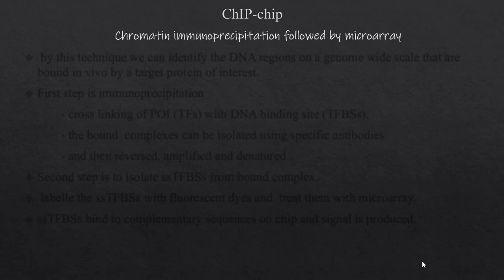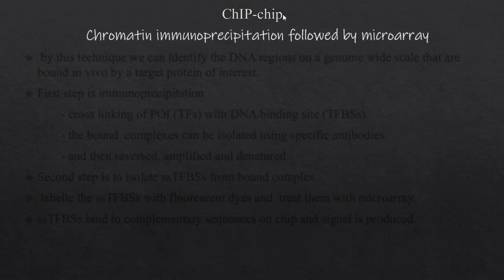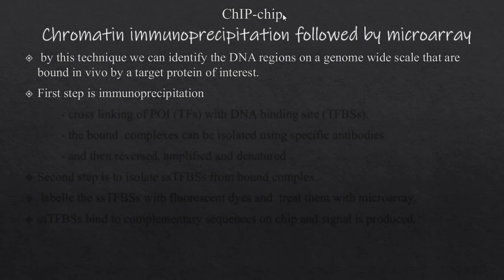The first method is ChIP-chip: chromatin immunoprecipitation followed by microarray. The first 'ChIP' stands for chromatin immunoprecipitation, and the second 'chip' refers to the microarray slide.